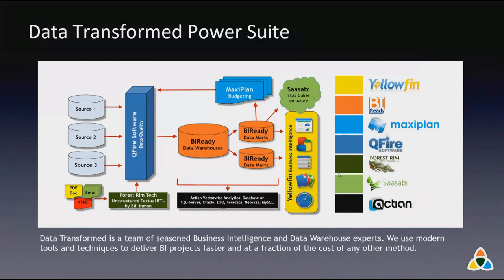We are a Yellowfin partner for front-end BI, a BI Ready partner for building data warehouses quickly, and offer MaxiPlan for budgeting and forecasting. We have QFire, an incredible data quality tool that puts data quality back in the hands of the business. We're also a partner of Actian, whose VectorWise product — recently renamed to ParAccel — is a super-fast analytical database engine performing about 100 times faster than competitors. And of course, we now bring Textual ETL from Forest Rim Technology, which can take information from any data source and bring it into a standard database.